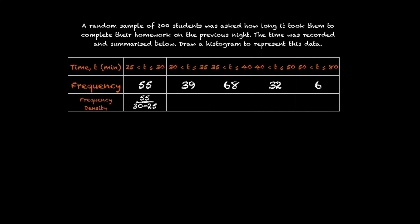For the second column, the frequency is given as 39. And the class goes from 30 to 35. So again, the class width is 5. And so the frequency density is 39 over 35 minus 30. Similarly, in the third column, we have a frequency density of 68 divided by 40 minus 35.